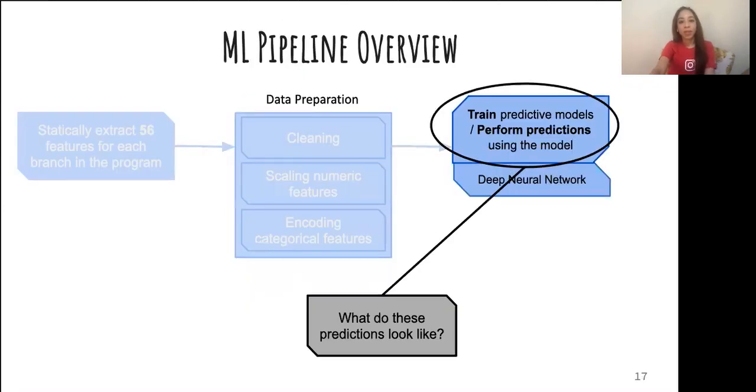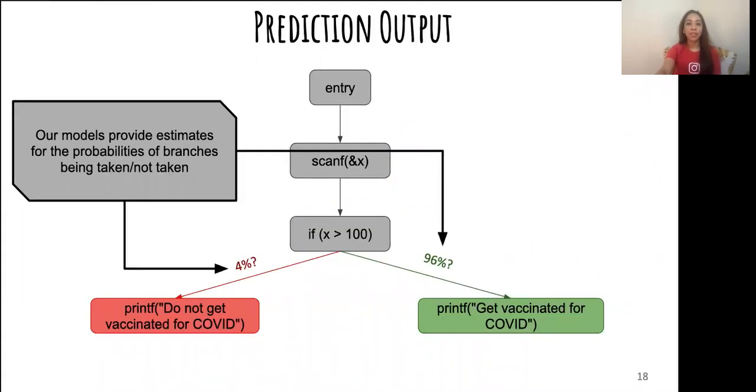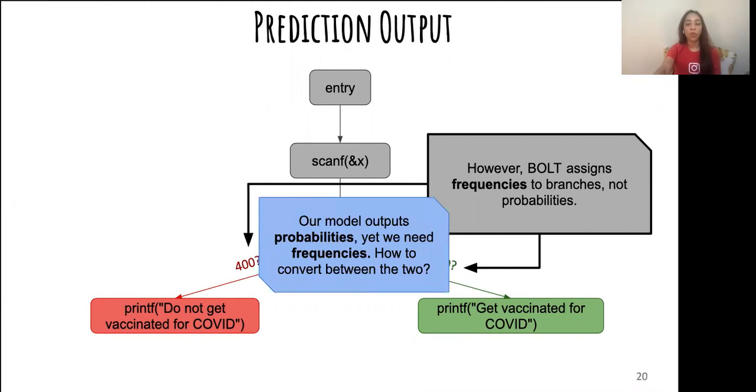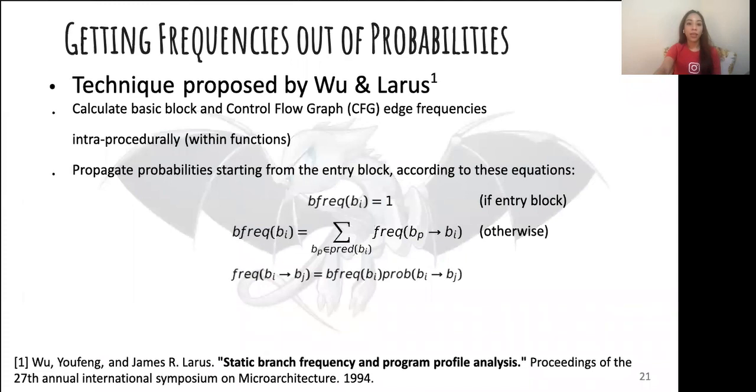Finally, when optimizing a program, our model outputs predictions for each of its branches. But how exactly does this look like? The model outputs an estimate for the probability of each branch should be taken. However, BOLT performs its optimization decisions based on branch frequency as determined by its execution counters. We need a way to go from the output probability to meaningful frequencies. And to this end, we use the technique proposed by Wu and Larus.